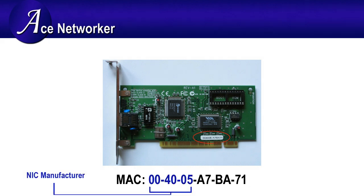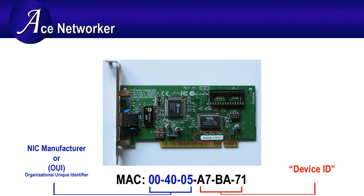The first six digits — in this example, 004005 — represent the number of the NIC manufacturer. Once the IEEE issues those six hexadecimal digits to that manufacturer, often called the Organizationally Unique Identifier, or OUI, no other manufacturer may use those six digits in that order. The last six digits — in this example, A7BA71 — are the manufacturer's unique serial number for that specific NIC. This portion of the MAC address is often called the Device ID. So the first half of the MAC address is the OUI, and the last six digits are the Device ID for that specific NIC card.